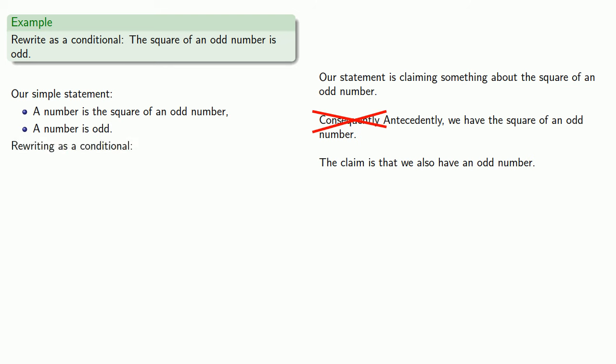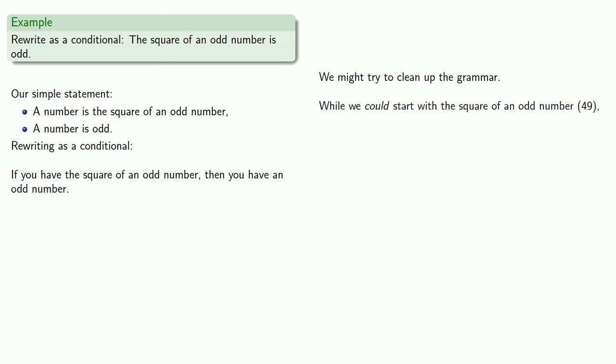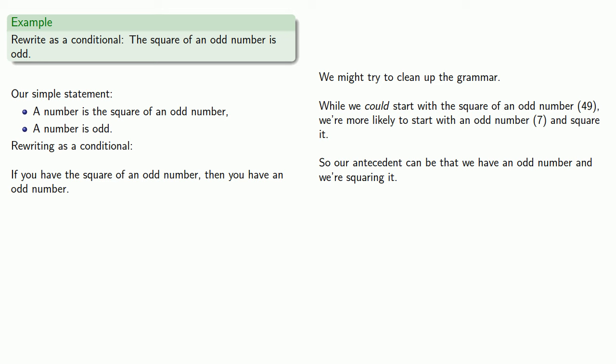Rewriting this as a conditional gives us: if you have the square of an odd number, then you have an odd number. While this is a perfectly good way to write the conditional, we might clean up the grammar a little. In practice we're more likely to start with an odd number and square it, so rewriting more simply: if a number is odd, then its square is odd.